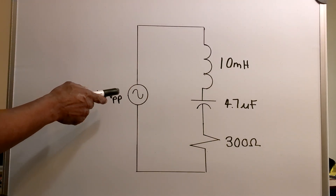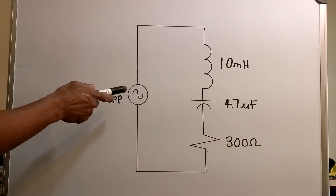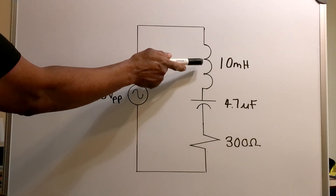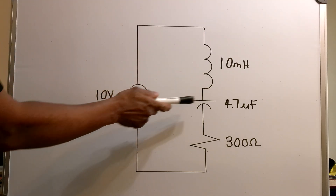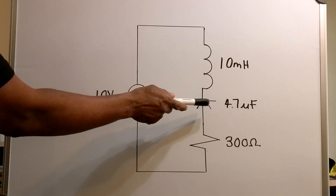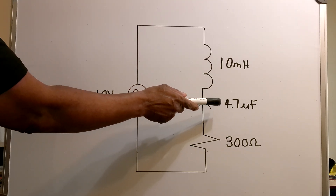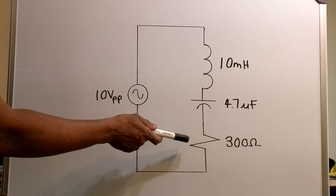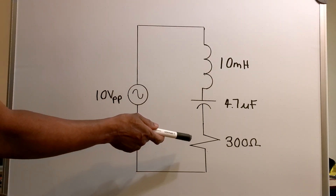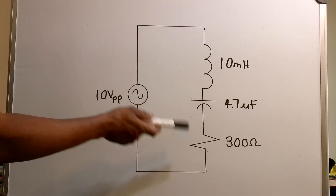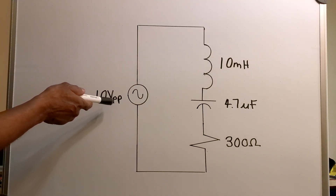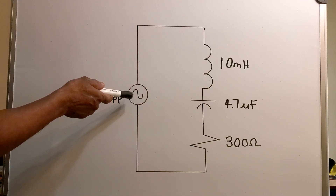In this video I've got a 10 mH inductor in series with a 4.7 mF capacitor in series with a 300 ohm resistor. My voltage is a 10 volt peak-to-peak sinusoidal voltage.